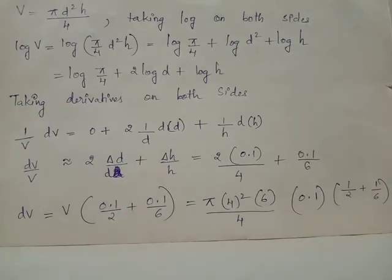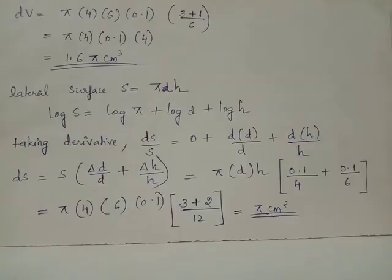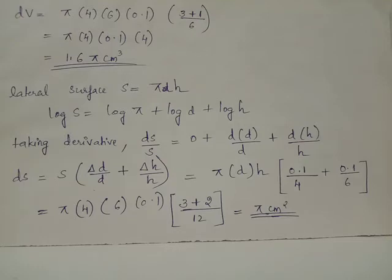Taking LCM, the bracket (1/2 + 1/6) becomes (3+1)/6 = 4/6. Thus dV = π × 4 × 6 × 0.1 × (4/6). Again we obtain dV = 1.65 cm³, which is the error in the value of volume of the can.